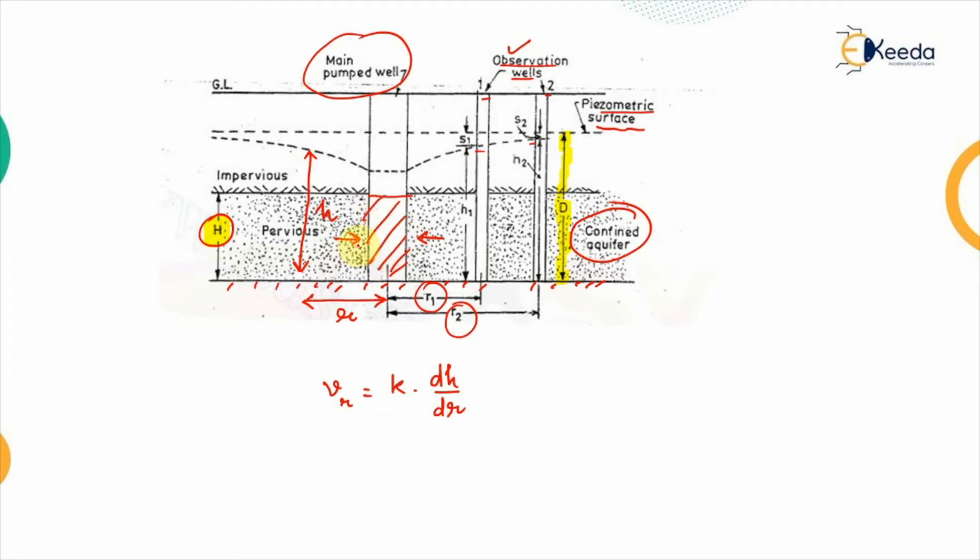So, what we will be doing in this case, the area of the cylinder that will be equal to the 2πr and that is let's say we are denoting it with small r. Now, here the height will be taken corresponding to the height of the confined aquifer and not the 2πr and capital D that should be kept in mind.